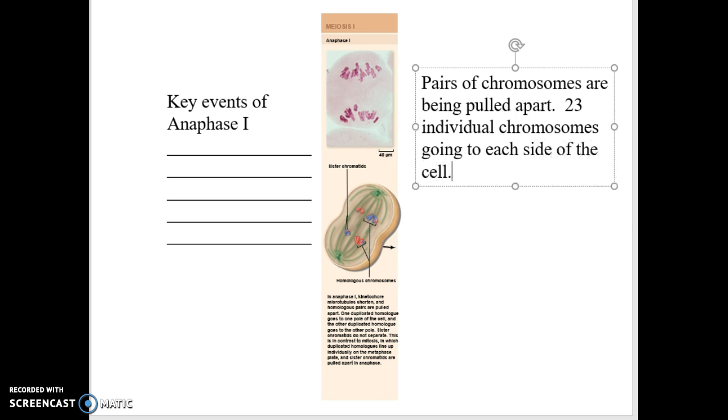Huge thing to keep in mind. 23 go to the right, 23 go to the left, or you could say top and bottom. 23 go each way, 23 chromosomes, the full X.